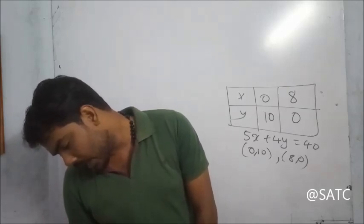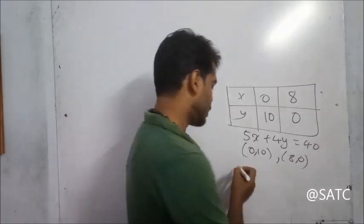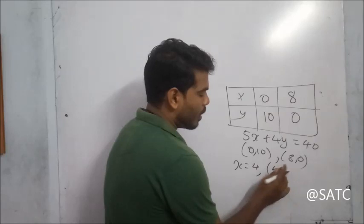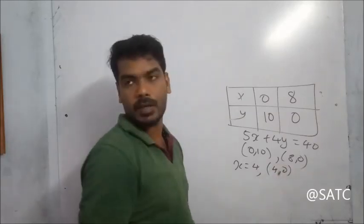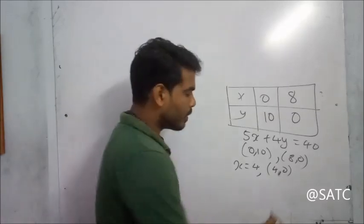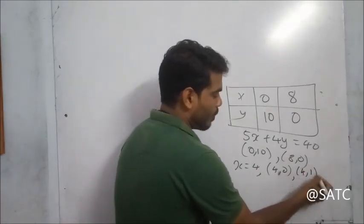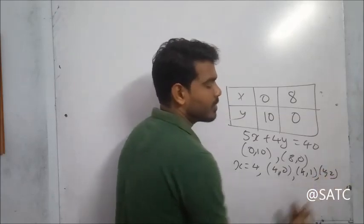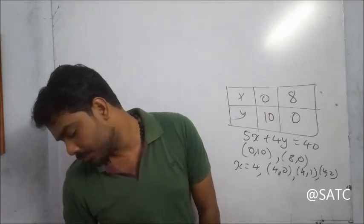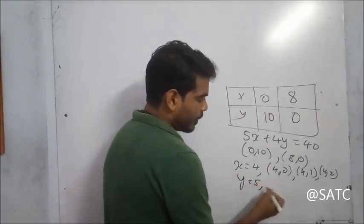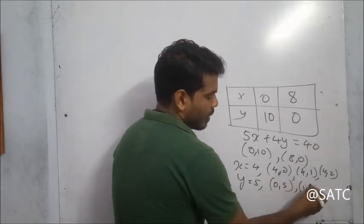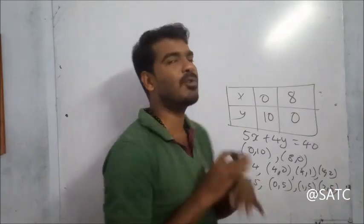For x equal to 4, we draw a vertical line at x equals 4. For y equal to 5, we draw a horizontal line. Points along y equal to 5 include (0,5), (1,5), (2,5), and so on up to 5.